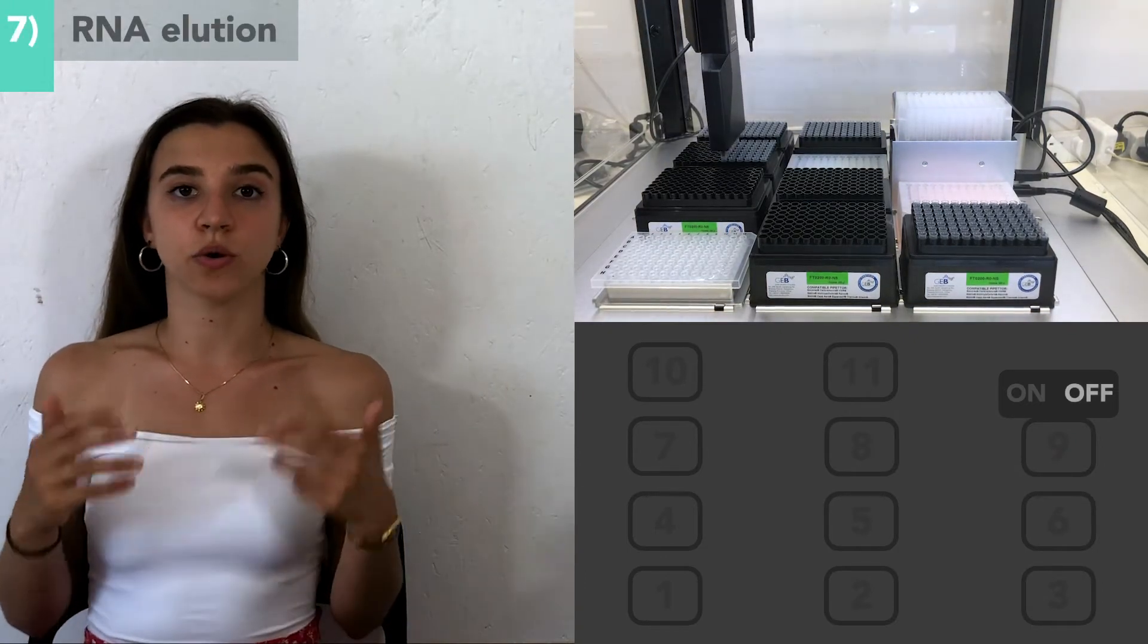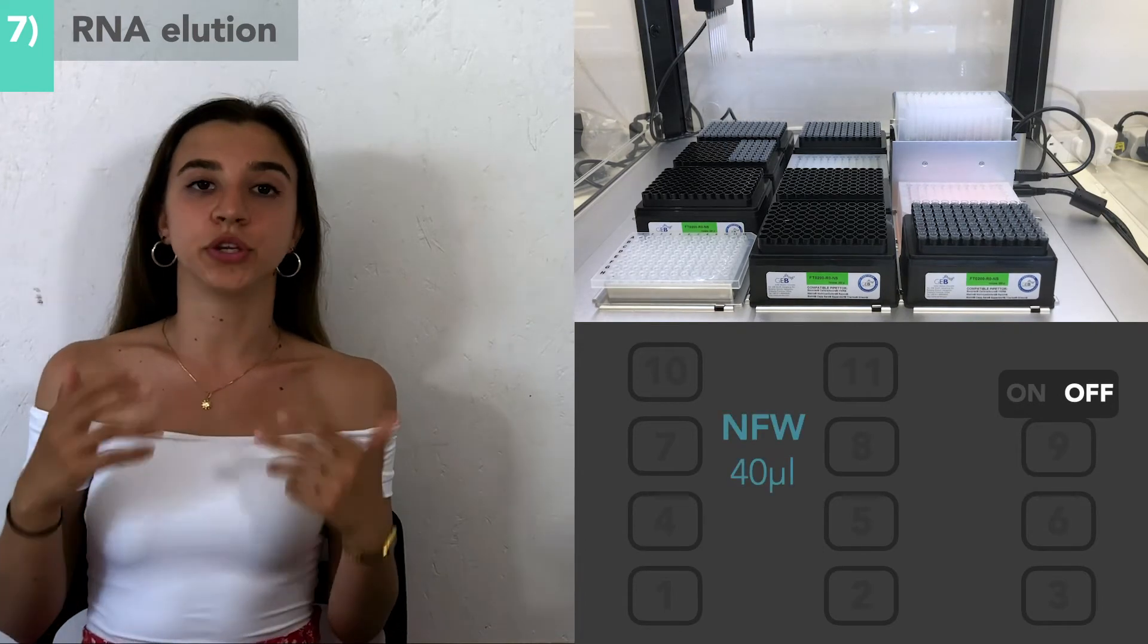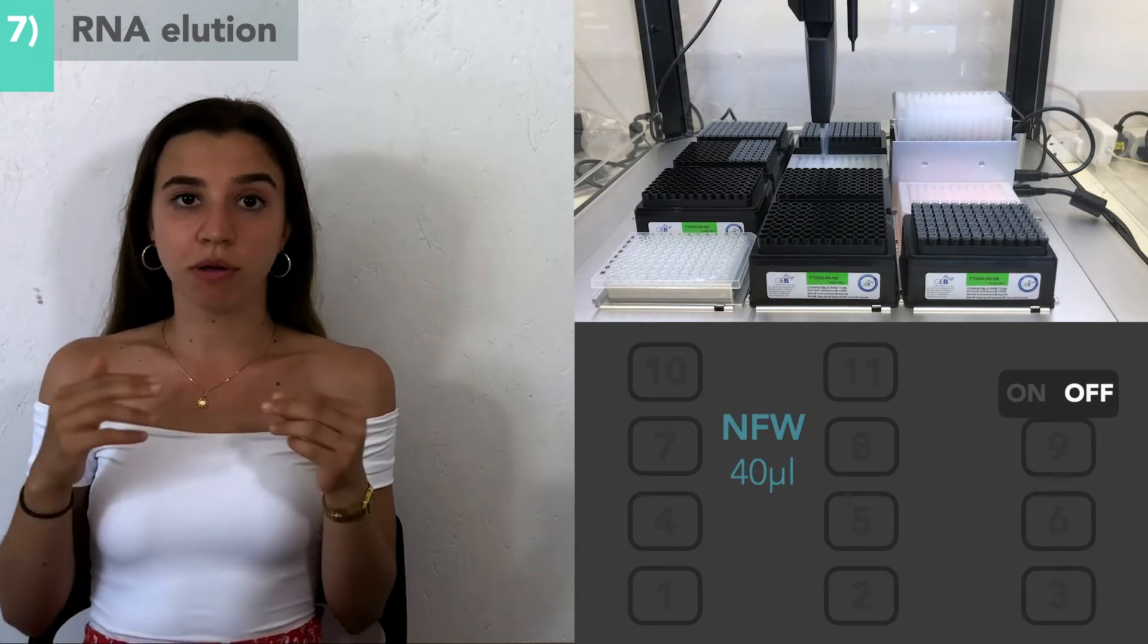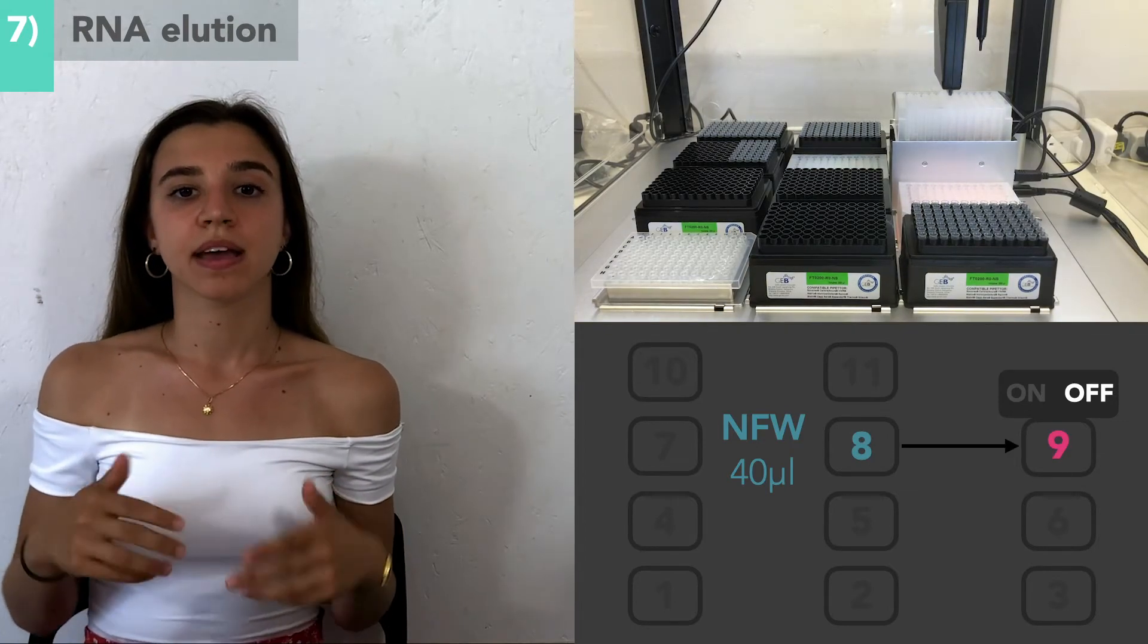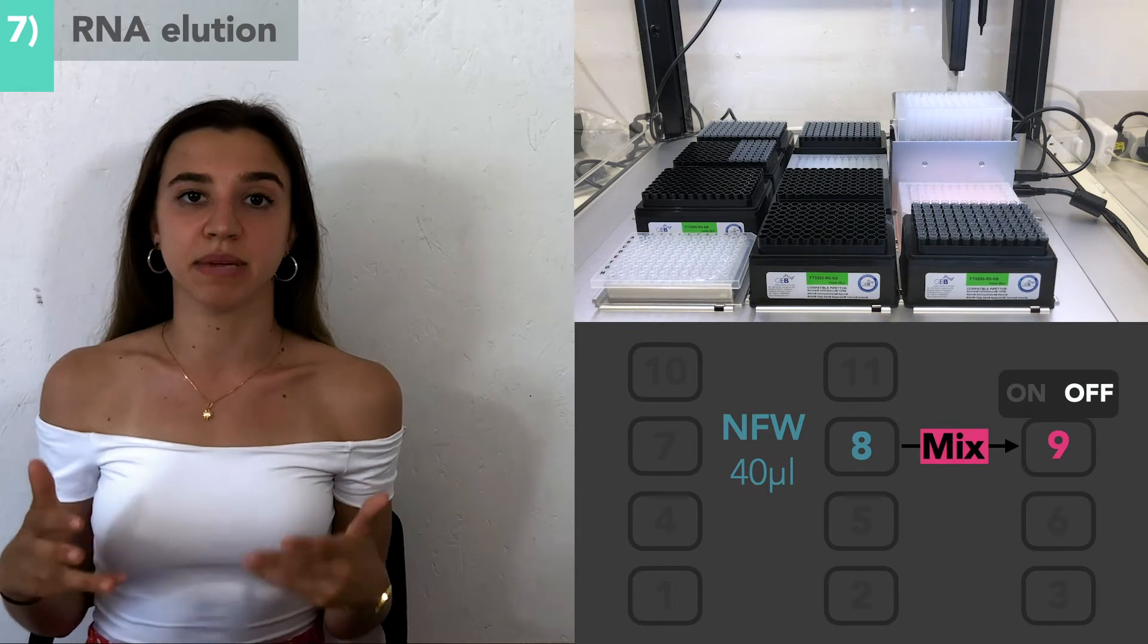While the magnet is turned off, 40 microliters of nuclease-free water from column 5 in slot 8 can be transferred to each sample well. This will then be mixed for five minutes.